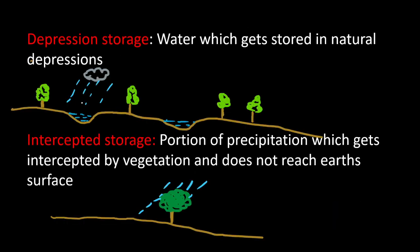Another component of the precipitation cycle is depression storage. There will be some natural depressions on the earth surface, and whenever rain occurs, some amount of water gets stored in these depressions temporarily. After a while they may also get evaporated. Such water stored in depressions is called depression storage.